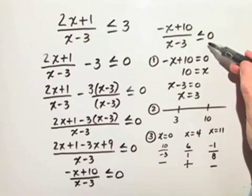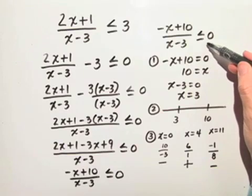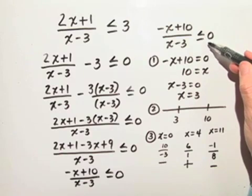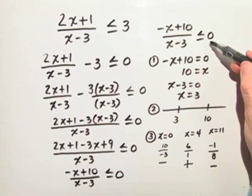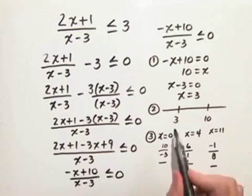Now we're solving this rational inequality. Negative x plus 10 over x minus 3 is less than or equal to 0. So that means I'm really looking for negative values or it can equal 0. So the negative values occur at the two outside intervals.